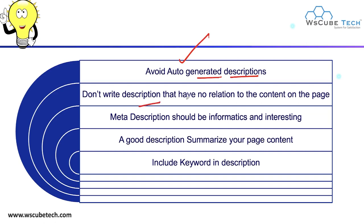Don't write a description that has no relation to the content of the page. For example, if you write a meta description using a particular keyword but that keyword or content is not available on your webpage, that is wrong practice. You should only write descriptions that match what is actually available on your webpage.